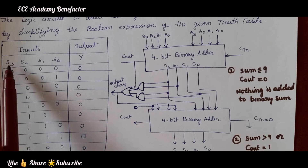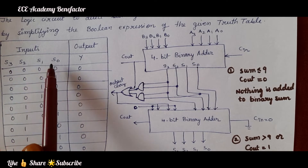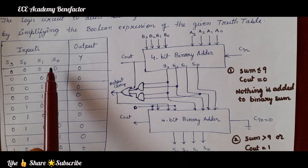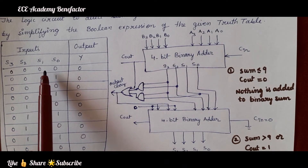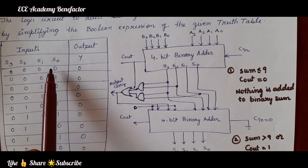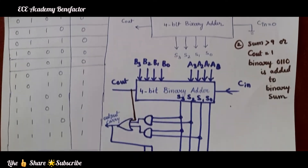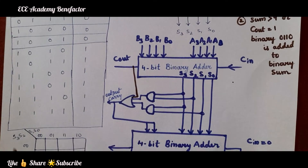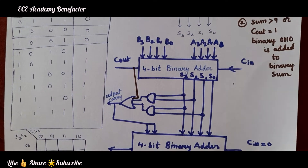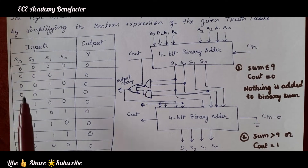For four variables S3, S2, S1, S0, how many possible combinations can we write? 16 combinations, varying from 0000 all the way to 1111. Total 16 combinations are possible, which I have written in this truth table here.